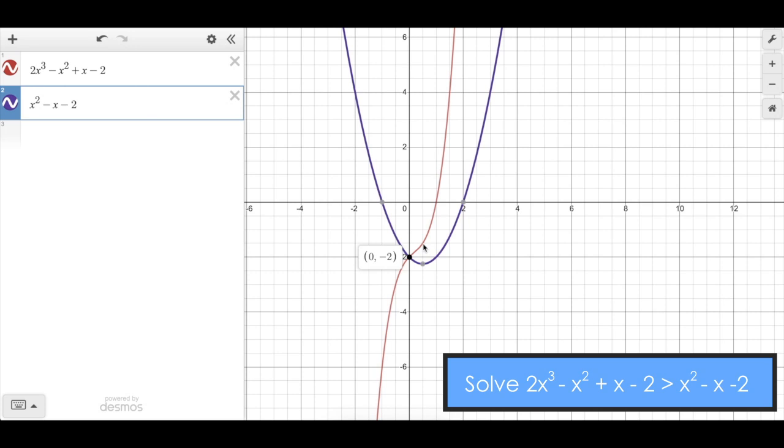This means that 2x³ - x² + x - 2 is greater than x² - x - 2 for all values of x that are greater than zero. You can see that that quadratic will never go on top of that cubic, which makes sense because the cubic is growing at a much greater rate.